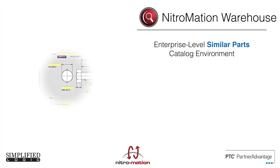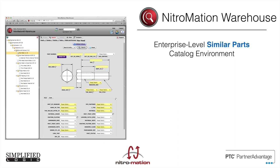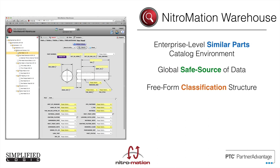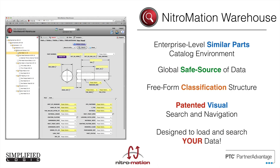The NitroMation Warehouse is our enterprise-level similar parts catalog environment. This particular product was created as a global safe source of data. It is a free-form classification structure and allows you to use a patented visual search and navigation process to obtain your corporate results immediately. It was designed specifically to load and search your data, not fill you up with other people's information.